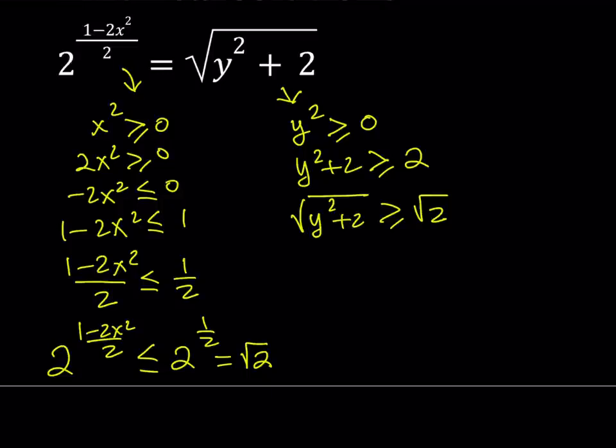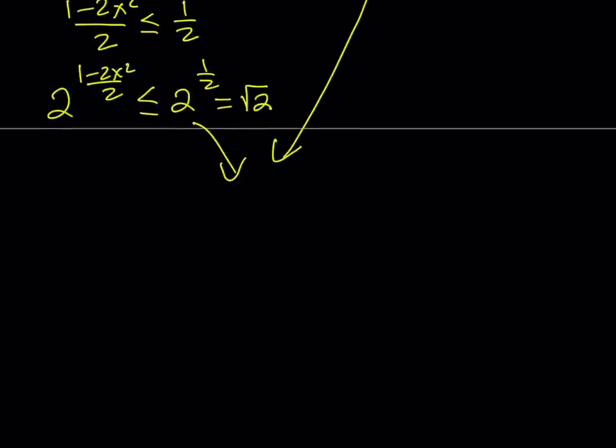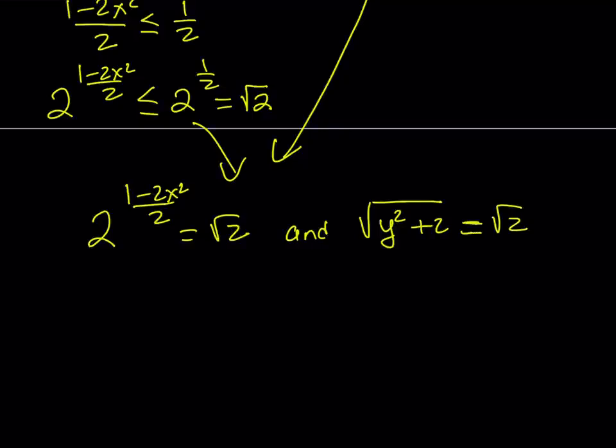Now, we have the following situation. We have an equation. The left-hand side is less than or equal to square root of 2, and the right-hand side is greater than or equal to square root of 2. And they're equal, so it's impossible that one is less than root 2 and the other one is greater than root 2. The only possibility here is that they're both equal to square root of 2. So, this implies both of these results imply that 2 to the power 1 minus 2x squared over 2 equals root 2 and square root of y squared plus 2 equals square root of 2. So, both of them have to equal square root of 2. That way, they can be equal.